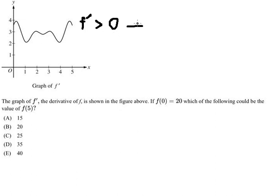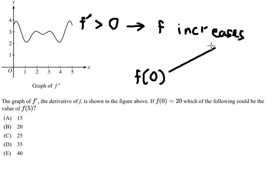From zero to five, f prime is always positive, which means f increases from f of zero to f of five.